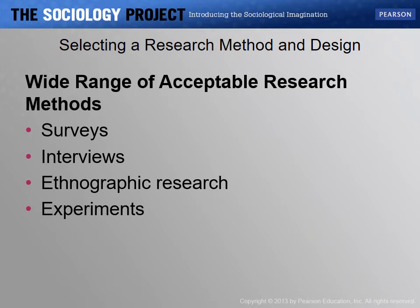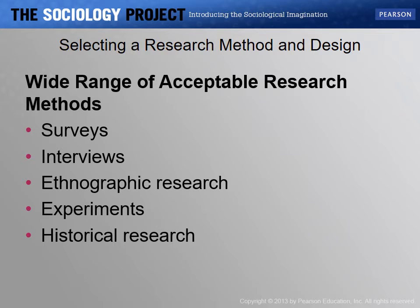True experiments are the gold standard of psychological and sociological research, where you control variables and measure outcomes. Historical research is also important in sociology because if you're studying something that happened in the past, you really can't control what's going on now. For example, if you were studying divorce rates over the last century, you can't really interview people who are no longer with us — so historical research is an important tool in the sociologist's toolkit.